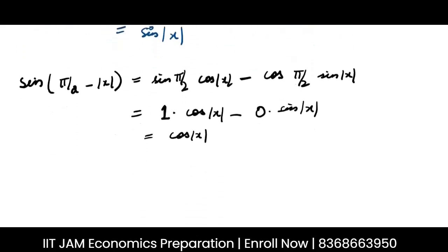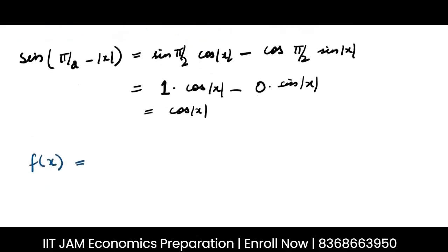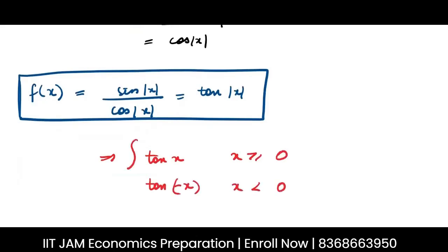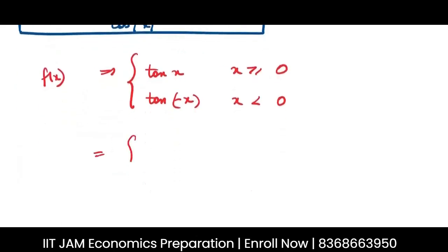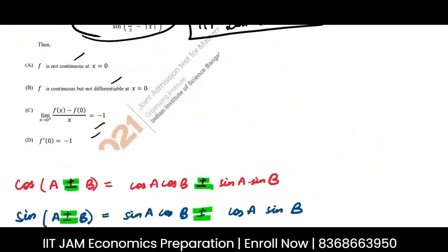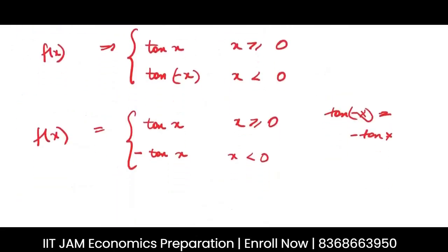Now if we rewrite the full function, it becomes sin|x| divided by cos|x|, and since sin over cos is tan, our function is simply tan|x|. This means the function is tan x when x ≥ 0, and tan(−x) = −tan x when x < 0. So we have simplified the given function to this piecewise form.